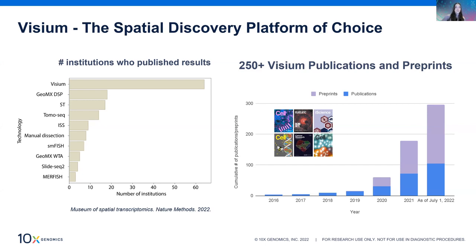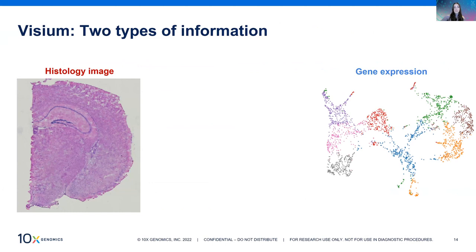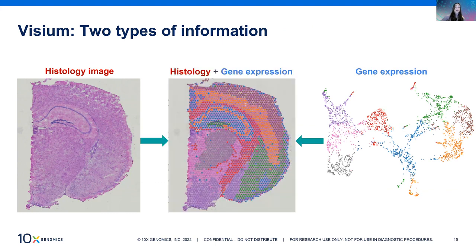Our Visium platform leads the way in spatial biology, exemplified by the number of institutions using our products and the productivity seen in publications and preprints that are growing exponentially every year. Visium combines two types of information: the histology image from the microscope and gene expression data from sequencing. The power of Visium is how these two datasets are combined — by overlaying Visium with morphology, you're able to see far more than with H&E staining alone.